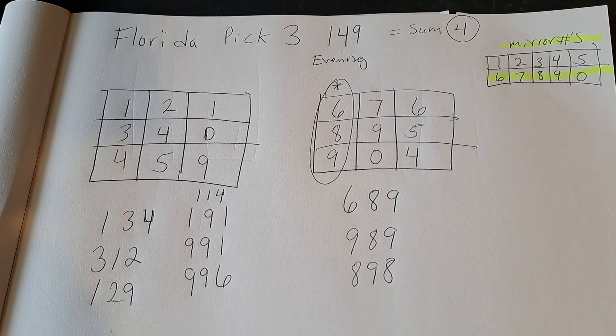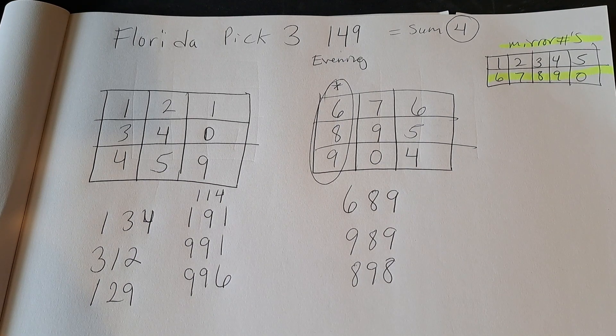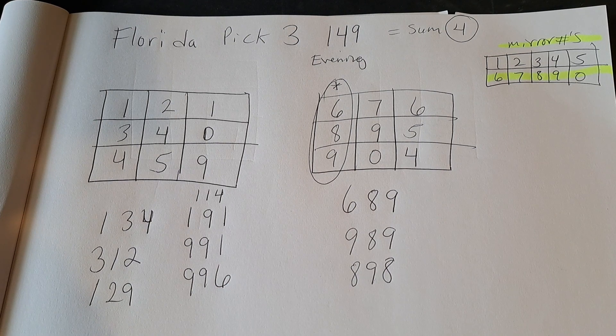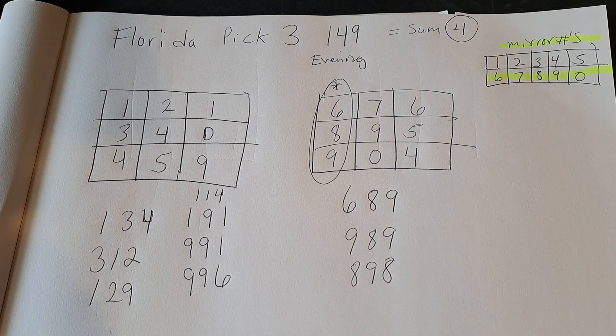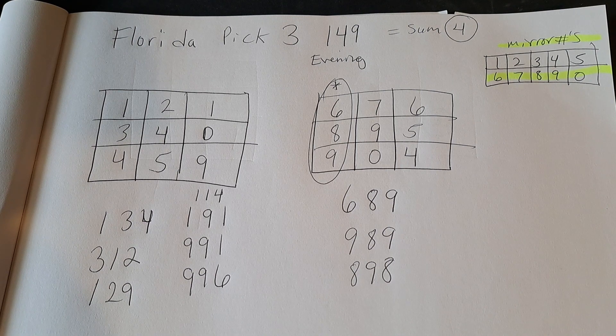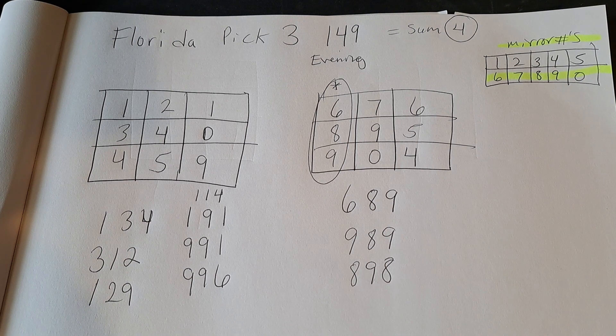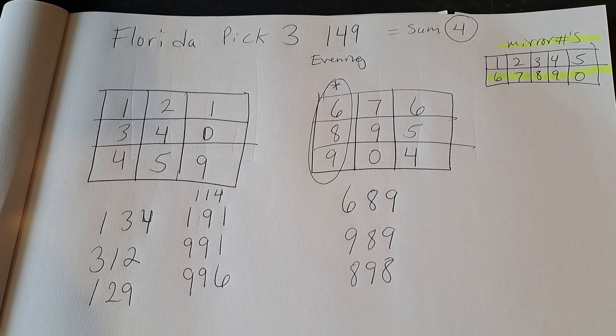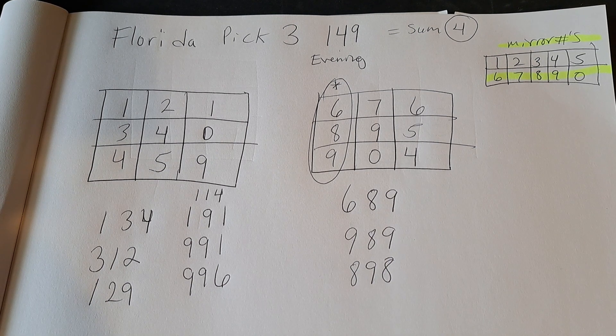Hello everyone and welcome to Lucky Lotto Picks. For today's video I'm doing a tic-tac-toe strategy for Florida using the evening number that came out 149. Before I get started please give the video a thumbs up and subscribe to my channel. Thank you for watching. Good luck everyone.